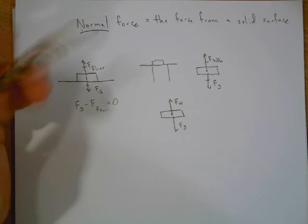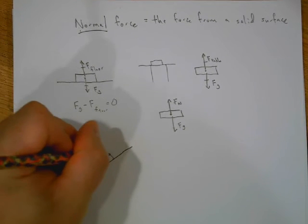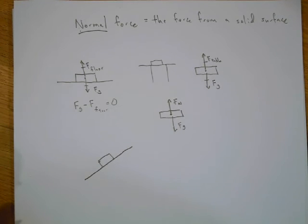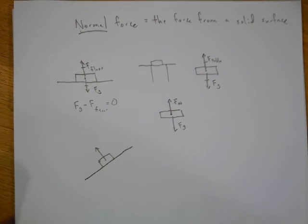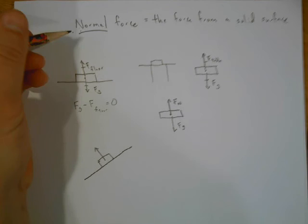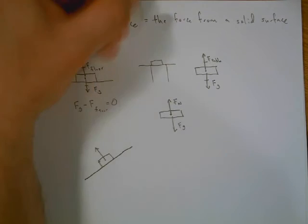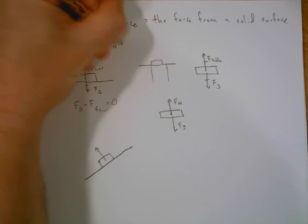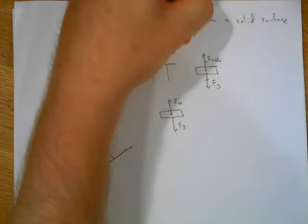Every problem is separate. Let's say you had a ramp and we put our book on the ramp. Does the normal force point straight up? No, of course not. The normal force in this case points this way, and if you notice, that is perpendicular to the surface. That's why they call it normal. In math speak, the word normal means perpendicular. The normal force Fn is always perpendicular to the surface.